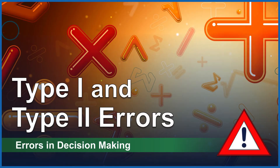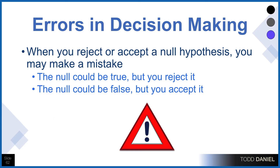There's one other idea we should explore. As we make our decision, it's possible that we could be wrong — we can make an error. There are two types of errors that can occur: type 1 and type 2 errors. When you accept or reject a null hypothesis, you can make a mistake. The null could be true but you reject it, or the null could be false but you accept it.